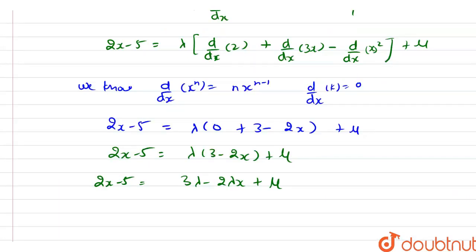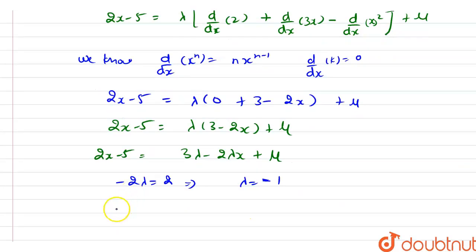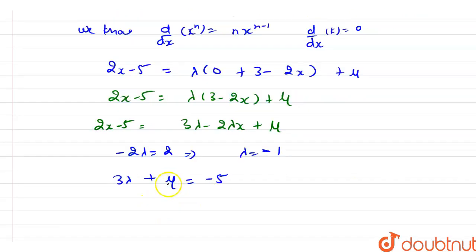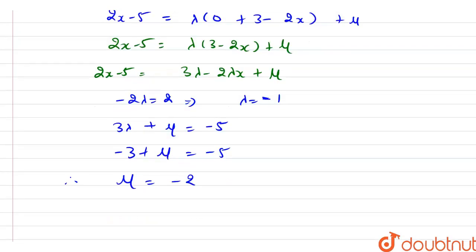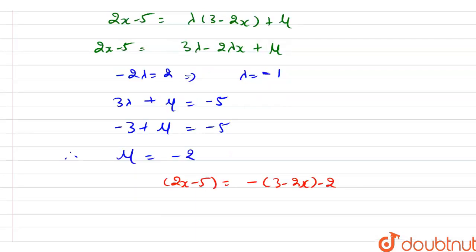By comparing the coefficients of x on both sides, we have minus 2lambda equal to 2, so lambda equals minus 1. Now comparing the constants on both sides: 3lambda plus mu equals minus 5, and since lambda is minus 1, we get minus 3 plus mu equals minus 5, so mu equals minus 2.